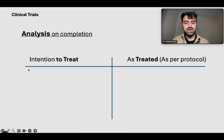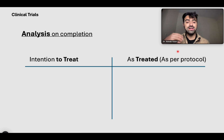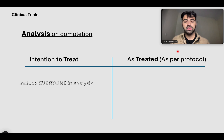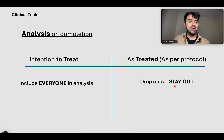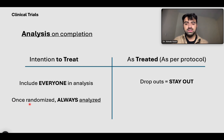One is intention-to-treat: when people signed up for the study, you analyze everyone. You take the intention of them being included in the study and analyze everyone. Once included in the study, once treated, always analyzed. Then you have something called as-treated or as-per-protocol: if they left the study, their data will not be included. So in ITT you include everyone in the analysis; in as-treated, once someone drops out, they stay out. Once randomized, always analyze.